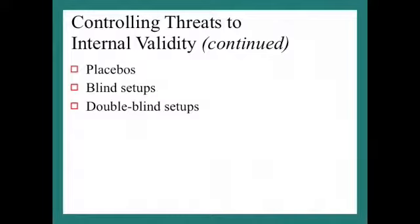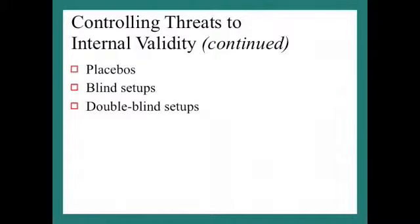A blind setup is when participants don't know whether they are in the experimental group or receiving the real or fake treatment. A double-blind setup is where both the participants and the experimenters don't know which treatment everyone is receiving — neither the researcher nor the participants know if it's real or not.